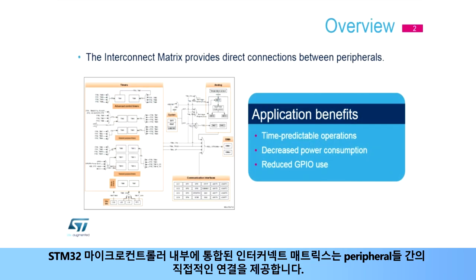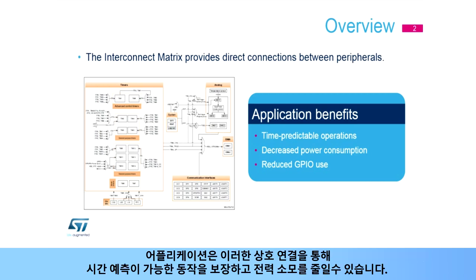The Interconnect Matrix, integrated inside STM32 microcontrollers, provides direct connections between peripherals. Applications benefit from these interconnections to ensure time-predictable operations and decrease power consumption.